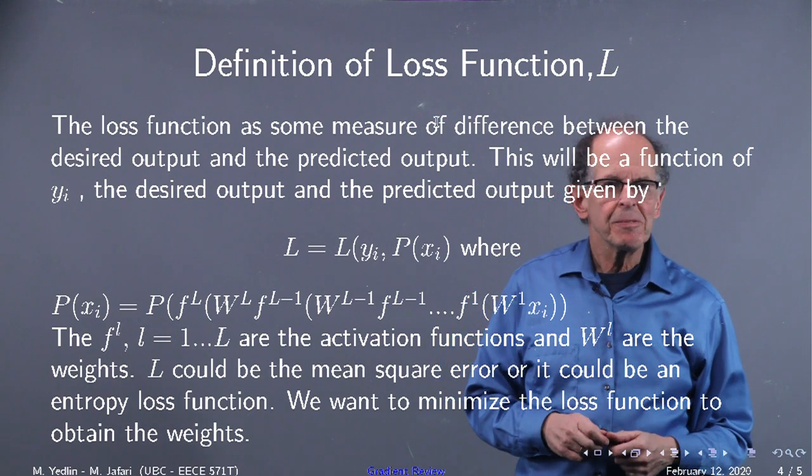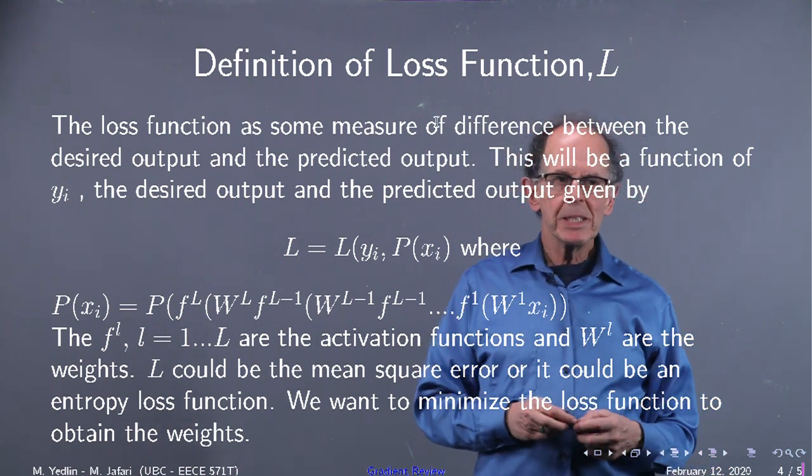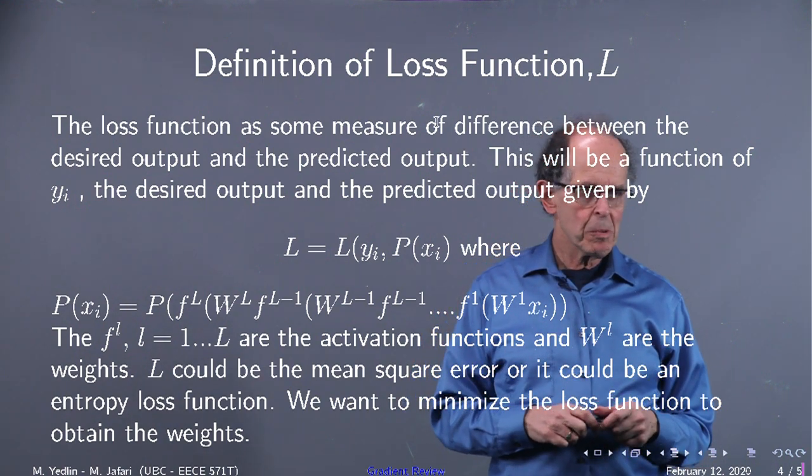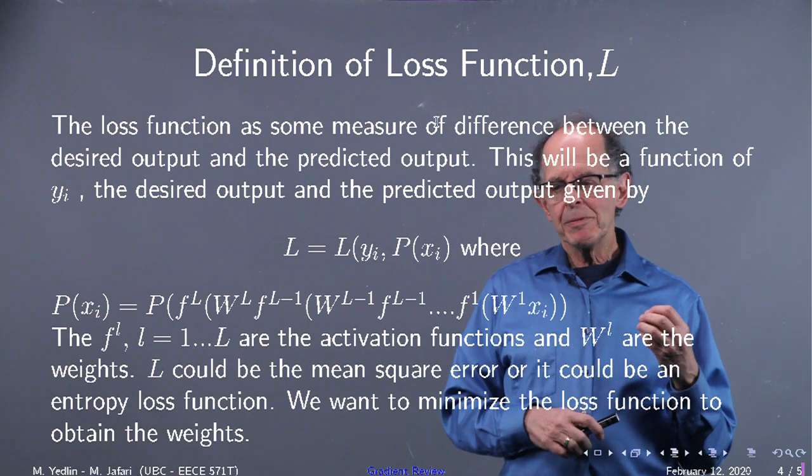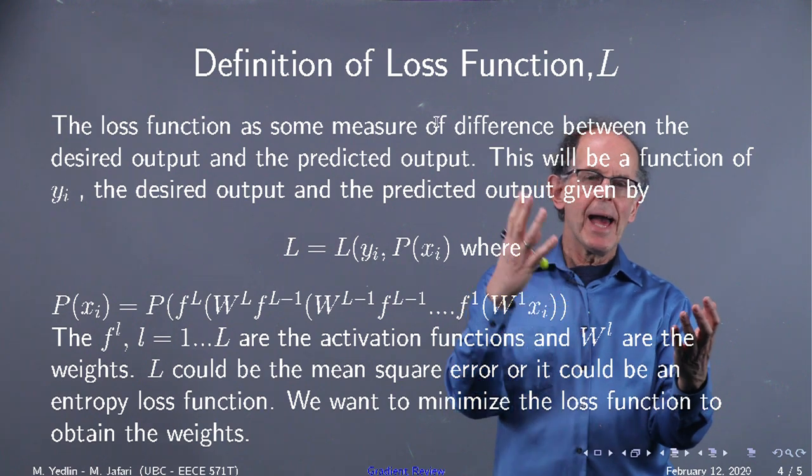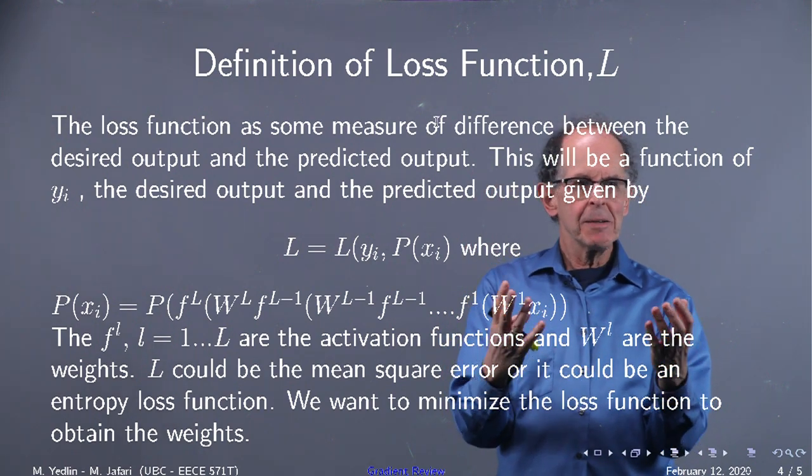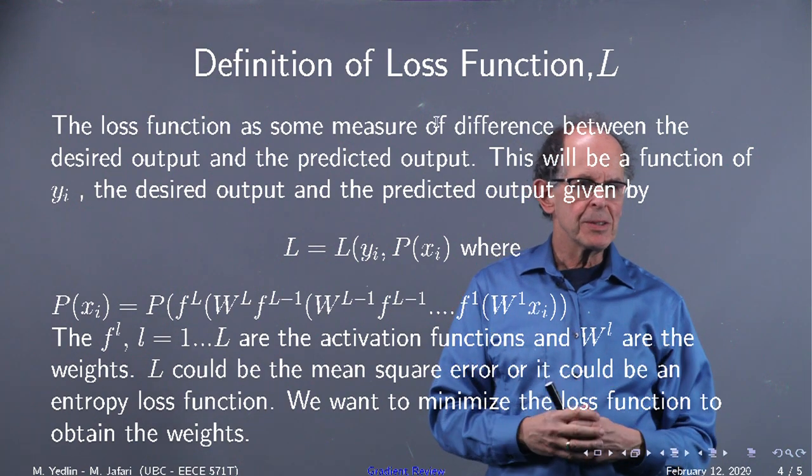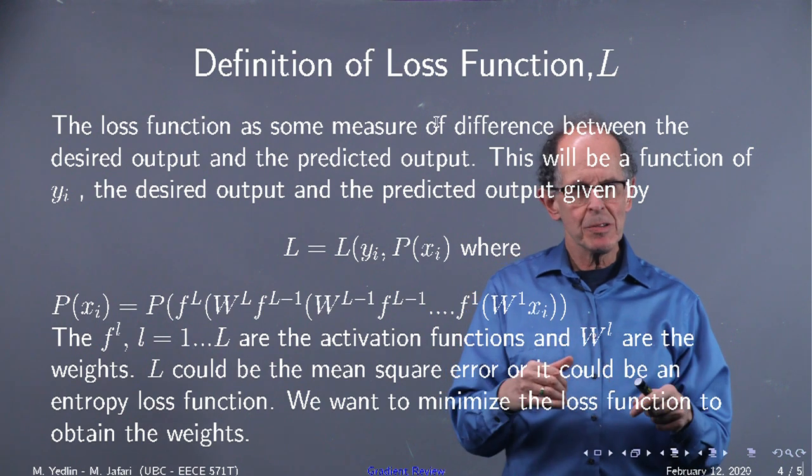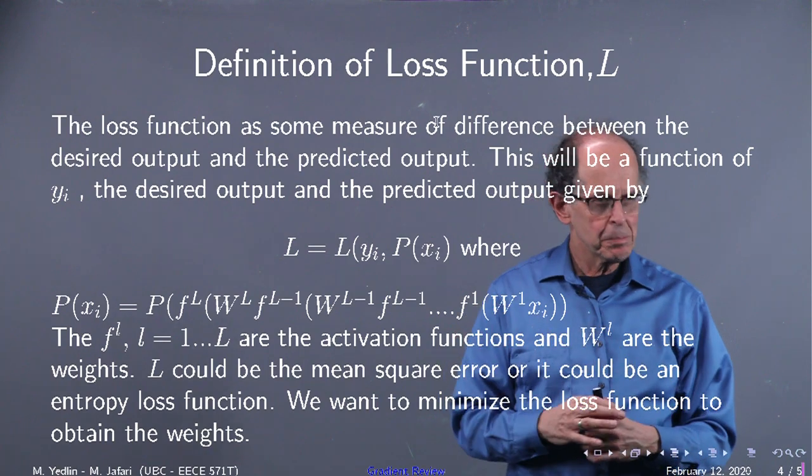The activation functions are usually sigmoid when we begin, but later on, we'll find another function that actually works better, and we'll see why. Also, we've looked at different discrepancies between the prediction and the desired output. So a simple one could be mean square error, or it could be entropy. The problem we have is to minimize the loss function to get the best weights that fit to the desired output.